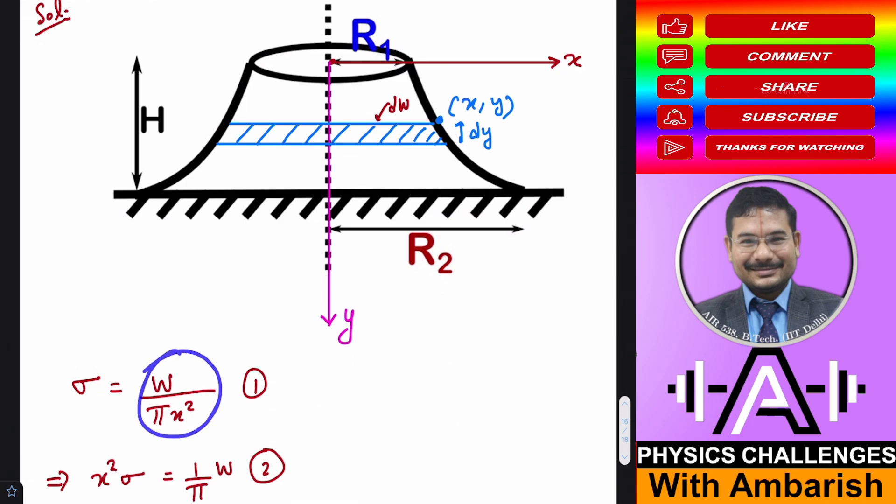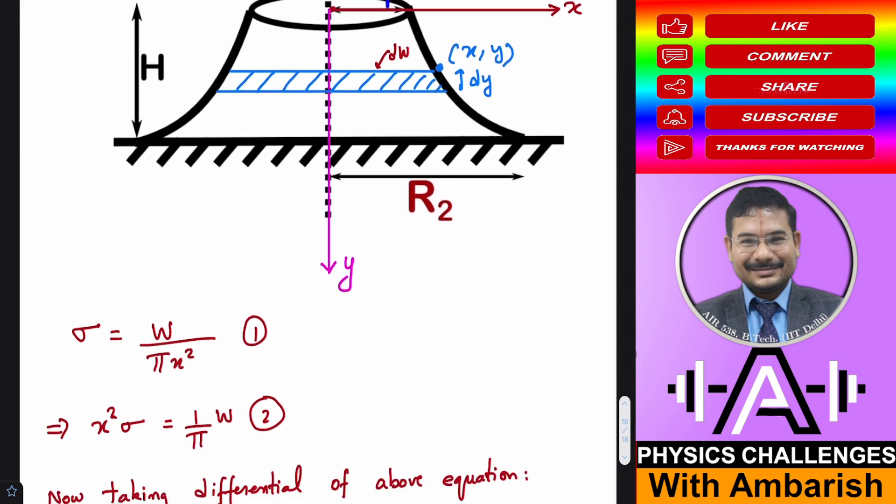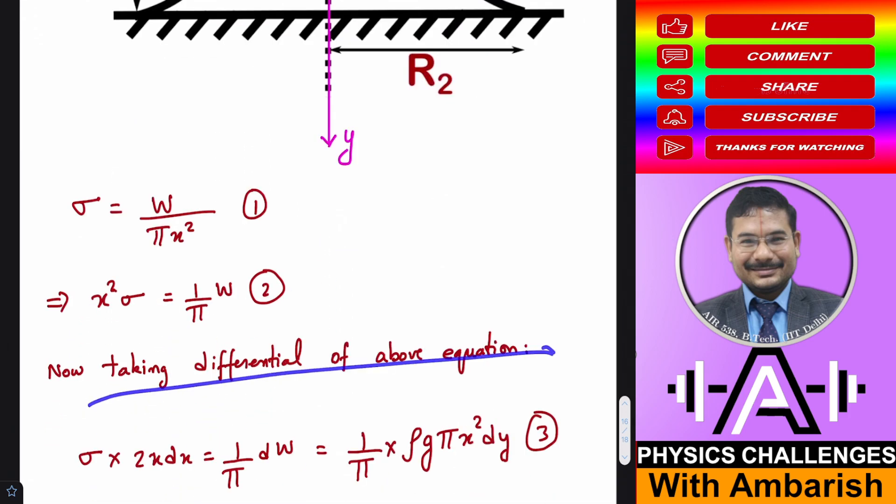So what I can do now I can take this x² to the other side. So we get x²σ is equal to 1/π times w. Now you take the differential of this equation on both sides. So if you take the differential of this, this becomes σ into 2x dx and right side you get 1/π times dw.